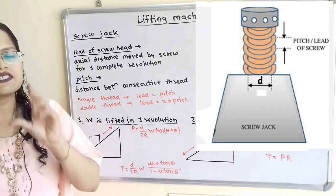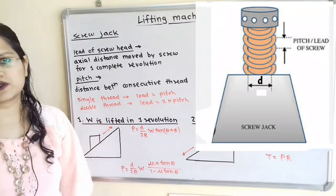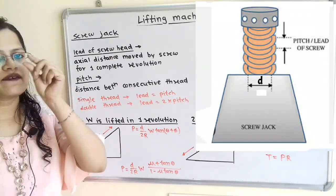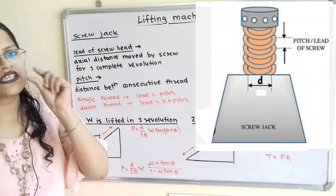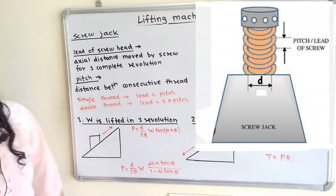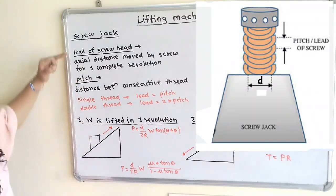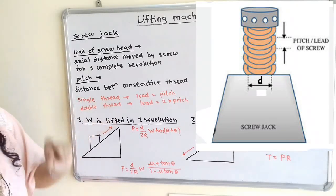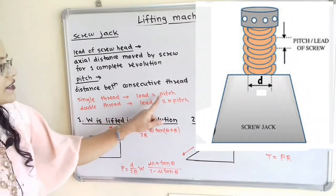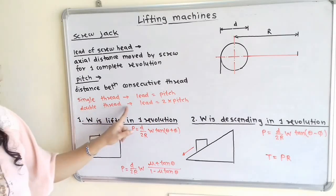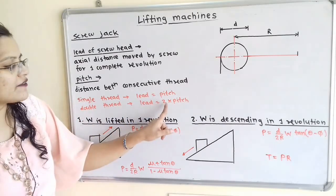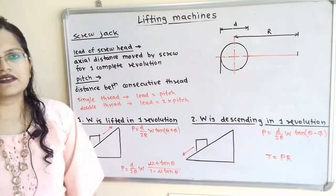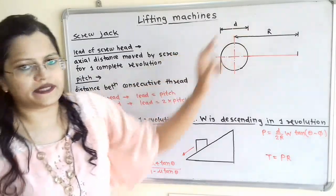The next important term is pitch. Pitch is related to threads on the screw. There are threads on the screw, and the distance between two consecutive or successive threads is known as pitch. For a single-threaded screw, lead is equal to pitch, and for a double-threaded screw, lead is equal to 2 times the pitch.